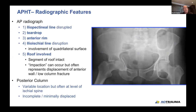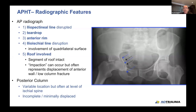Going through the radiographic features: for most of these types, five out of the six lines will be involved. The posterior rim or wall will not be involved, but the iliopectineal line will be disrupted because you have involvement of the anterior wall/column. The teardrop and the anterior rim are involved as you get medialization of those findings with displacement of the anterior wall or column. The iliopectineal line can be disrupted by simply involvement of the quadrilateral surface, or by involvement of the posterior column and medial rotation of the quadrilateral surface as it is attached to the posterior column.